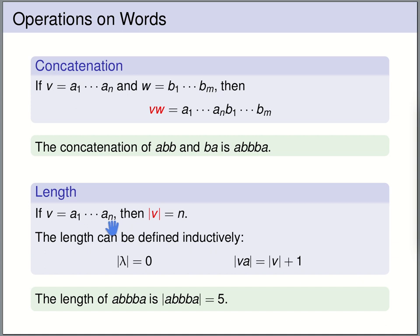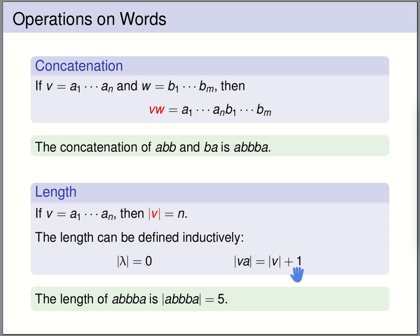The length of a word is the number of letters in the word. If v consists of letters a1 up to an, then the length of v is n. The length can be defined inductively: the length of the empty word is 0, and the length of a word va, where a is a single letter, is the length of v plus 1. For instance, the length of the word a, v, b, b, a is 5 — we have 1, 2, 3, 4, 5 letters in the word.